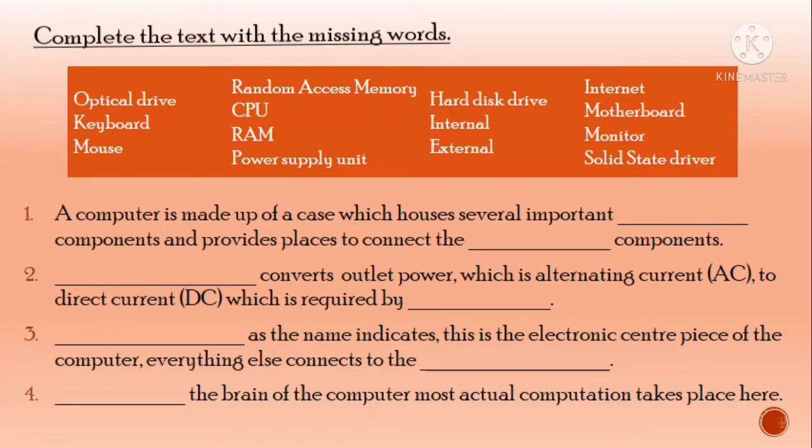Next question is complete the text with the missing words. Here you can see number one, a computer is made up of a case which houses several important components. The computer case has been made up of different components. So which components are available? These are the CPU components and it provides places to connect the dash components, and within these components we call external components.